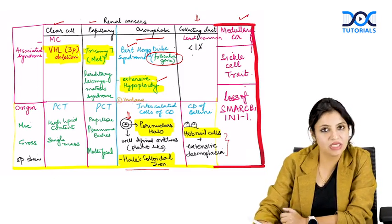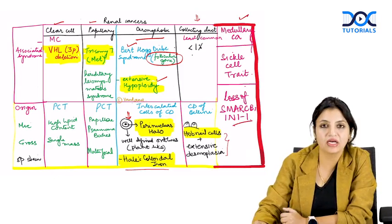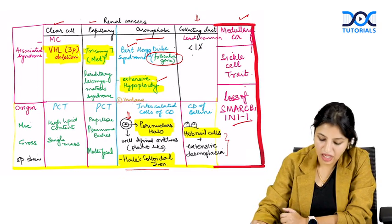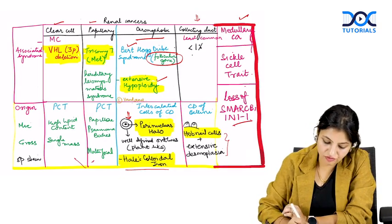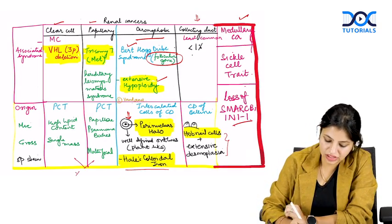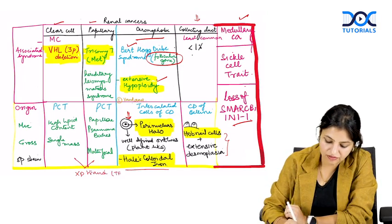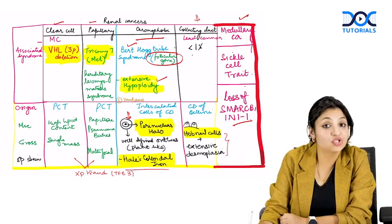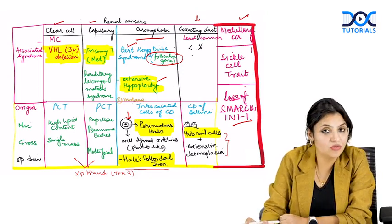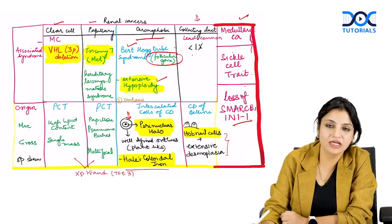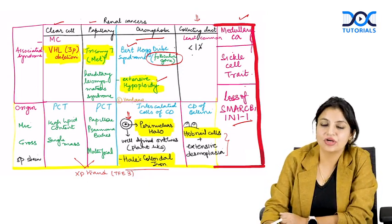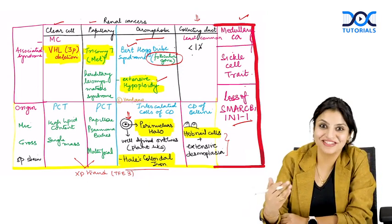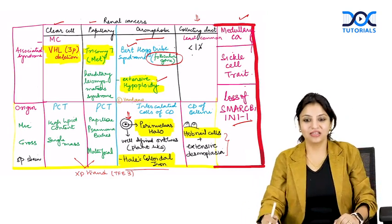Medullary carcinoma of the kidney is usually associated with sickle cell trait, and SMARCB1/INI1 is a very characteristic mutation. Whenever there is a mixture of clear cell and papillary features, this indicates an XP translocation cancer with the TFE3 gene involved. That completes the gist of renal cell carcinoma. Now let's move on to the benign renal cell tumors.